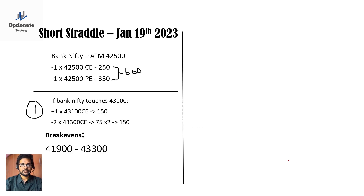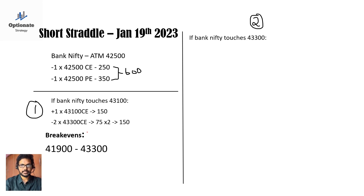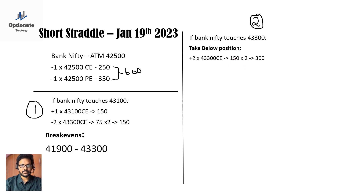You can ask: even after the first adjustment, if Bank Nifty touches 43300, what do I do? Yes, you can do a second adjustment trade. When Bank Nifty touches 43300 (your new break-even), you buy two lots of 43300 because you had already sold two lots. You may ask: I sold at 75 rupees but now the price has increased — yes, you are buying at 150 rupees for two lots, so totally 300 rupees, but you only collected 150 earlier.